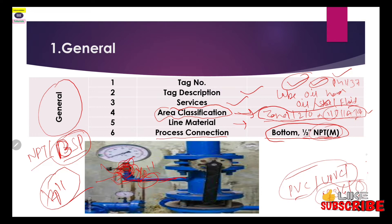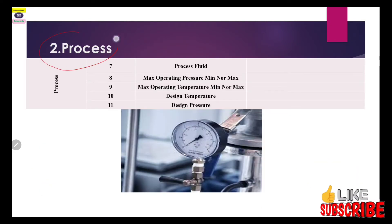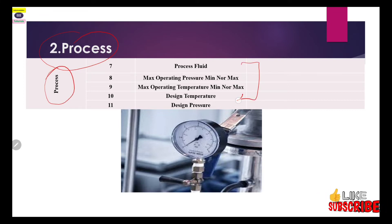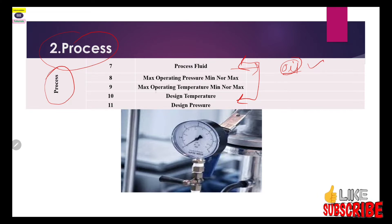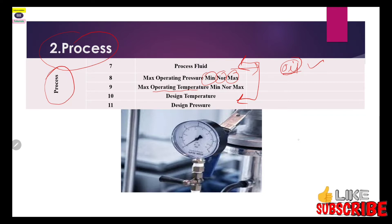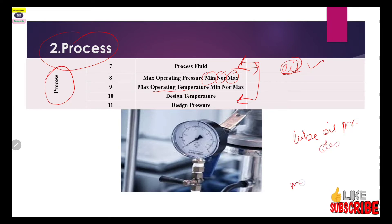The second section is process-related specifications, which is very important because this data is required from the process side. When purchasing a pressure gauge, all specifications required for operation must be filled in here. Process fluid — for example, if you are purchasing a gauge for lube oil, the fluid is oil. Then maximum operating pressure: you should know your lube oil discharge pressure.